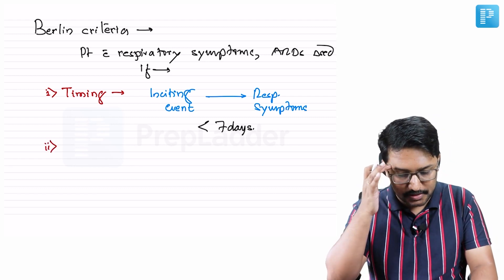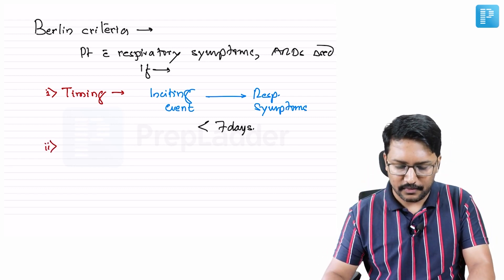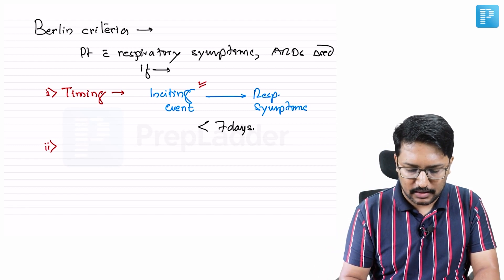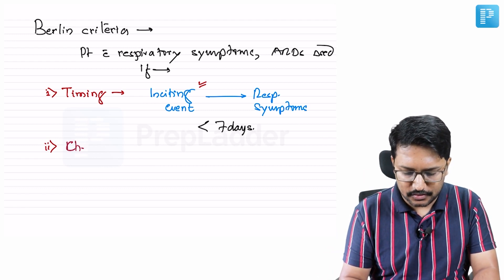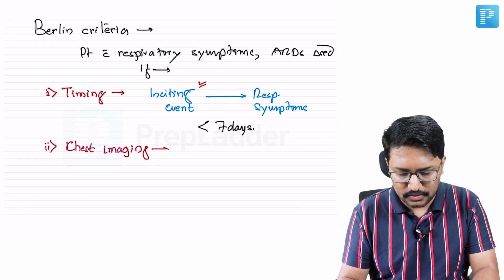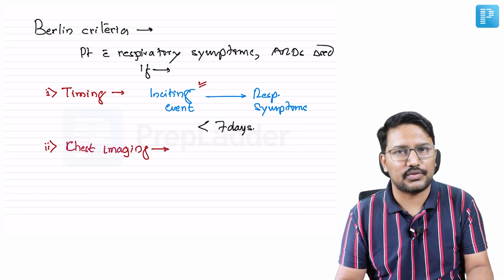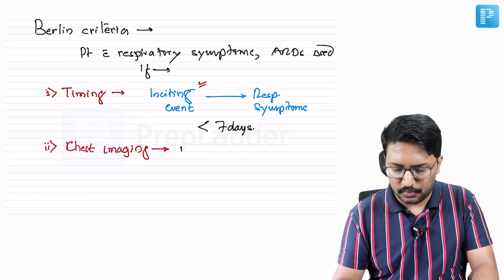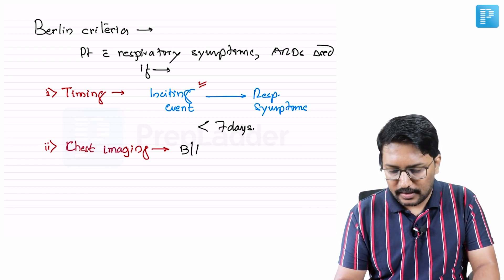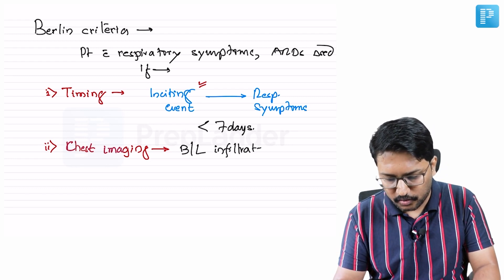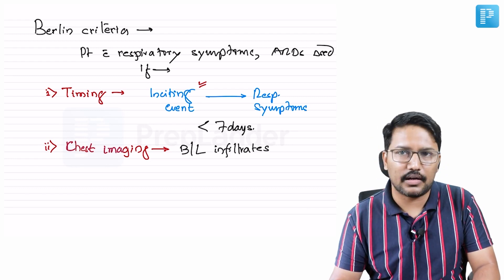Second criterion: the patient who developed respiratory symptoms within seven days of an inciting event should have bilateral chest infiltrates. On chest imaging — whether X-ray or CT — X-ray is more than adequate in most cases, and practically we have started using ultrasound as well. On chest imaging, there should be bilateral infiltrates. We are talking about bilateral alveolar infiltrates.